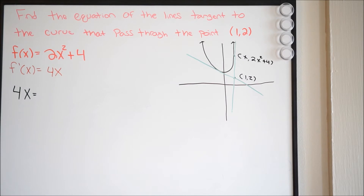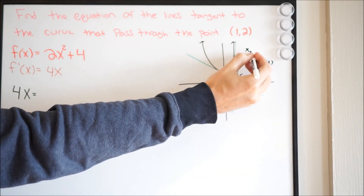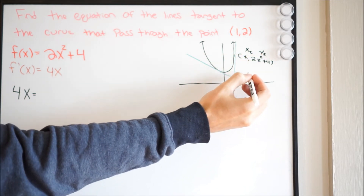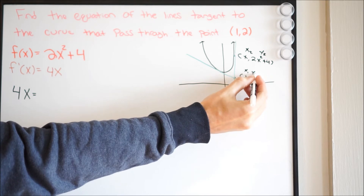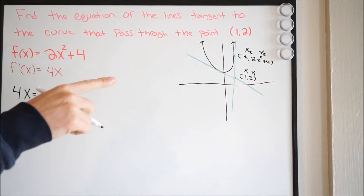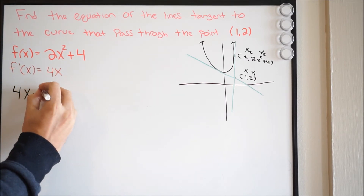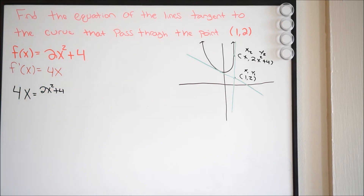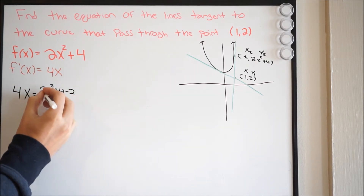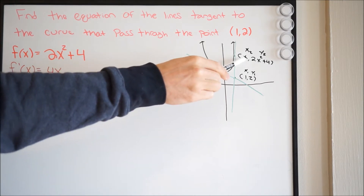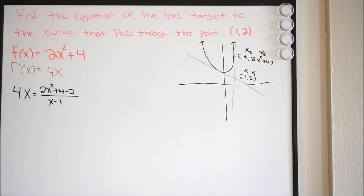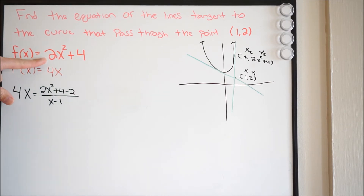So filling in this equation: I'll call the unknown point (x₂, y₂) and the known point (x₁, y₁) = (1, 2). We get 4x = (2x² + 4 − 2) / (x − 1). We can see here that we're all in terms of x, and we want to solve for x. When we solve for x, that gives us the x-value of the point on our curve, and then we can plug it into the original equation to get the y-value.